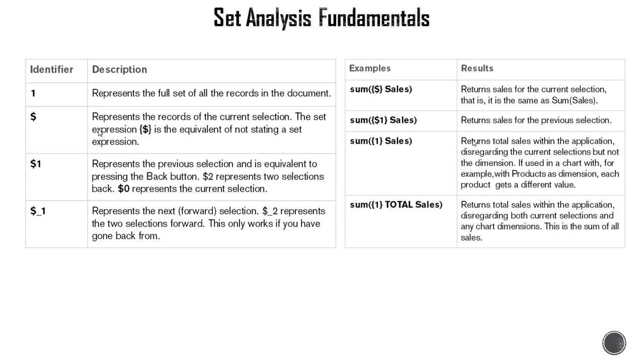Now let's look at the examples. At minimum, every expression that you write has a set component. For instance, when you type sum of Sales, internally Qlik Sense expression engine is adding curly braces with a dollar sign, which means the current selection or default state. So sum of Sales and sum of dollar Sales within curly braces are the exact same thing—they both render the same value. If you put sum of 1 Sales, that means it will ignore all user selections.